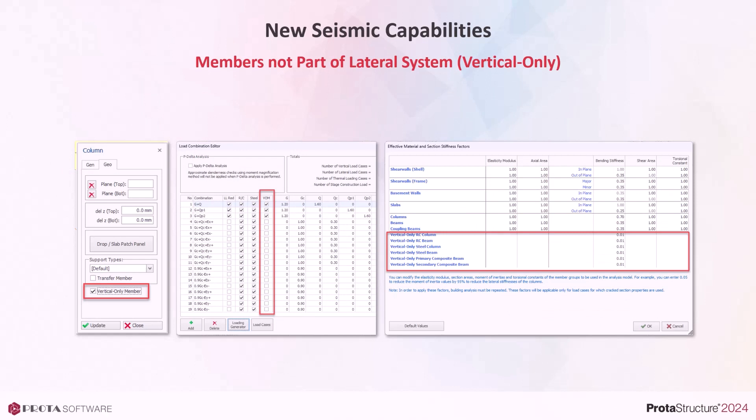For seismic design, it is usually necessary to designate some members as not part of the lateral load resisting system. This has wide usage in seismic design practice and was frequently requested by our users. With ProtoStruxure 2024, you can now designate column and beam members as vertical only in their property windows. In this case, they are designed under designated vertical combinations, excluding other seismic or lateral combinations. ProtoStruxure will automatically mark vertical combinations for vertical-only design, and you can include or exclude any existing combinations in this category.